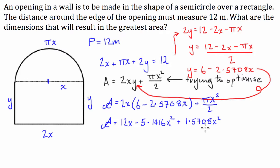Now we can combine these like terms here. So we're going to have 1.5708 minus 5.1416, 3.5708 x squared.